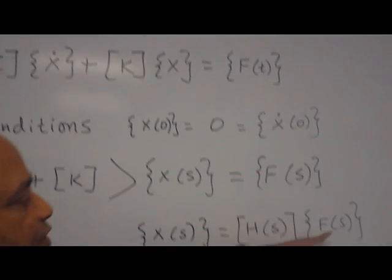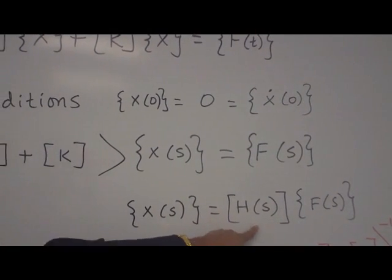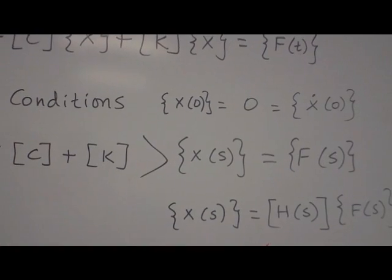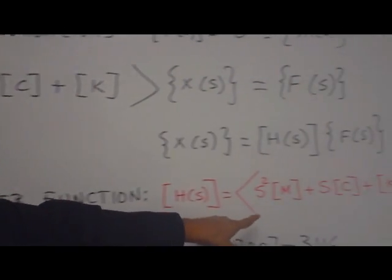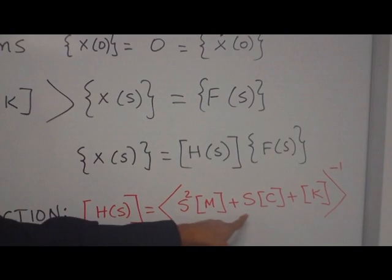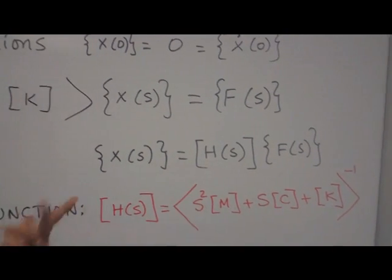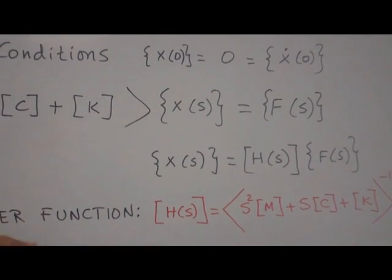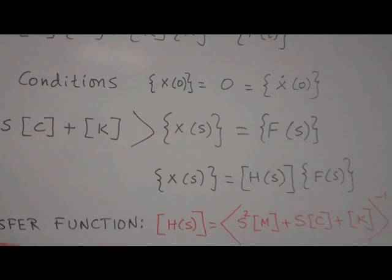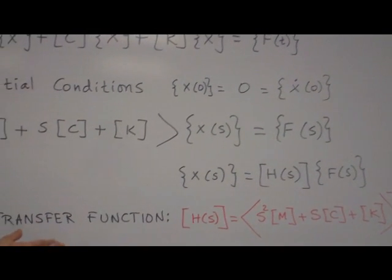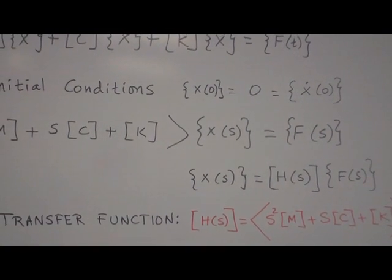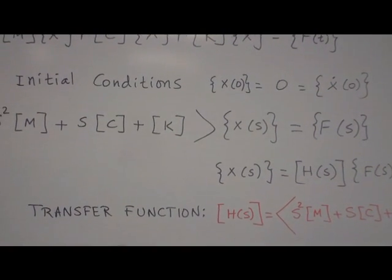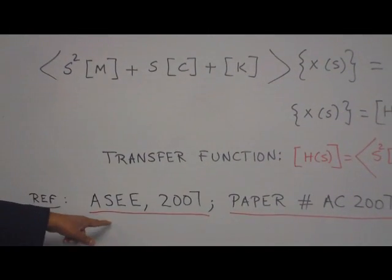Now x of s equal to taking those things on the other side, h of s, f of s. So the h of s should be equal to inverse of the whole thing. You can see here transfer function h of s equal to inverse of s square M plus S times C plus K. Since in the matrix form, one can easily apply MATLAB, find the inverse. Once you have the inverse, you have the transfer function.